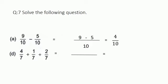Part D: 4 by 7 plus 1 by 7 plus 2 by 7. Since they are also like fractions, we just add the numerators and keep the denominator as it is. So 4 plus 1 is 5, 5 plus 2 is 7. The answer is 7 by 7.